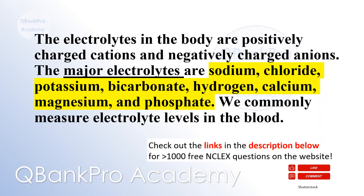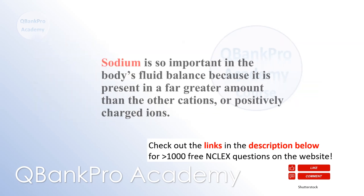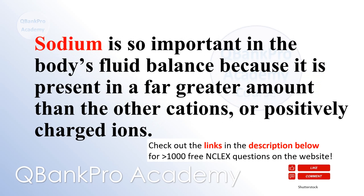The electrolytes in the body are positively charged cations and negatively charged anions. The major electrolytes are sodium, chloride, potassium, bicarbonate, hydrogen, calcium, magnesium, and phosphate. We commonly measure electrolyte levels in the blood. Sodium is so important in the body's fluid balance because it is present in a far greater amount than the other cations, or positively charged ions.